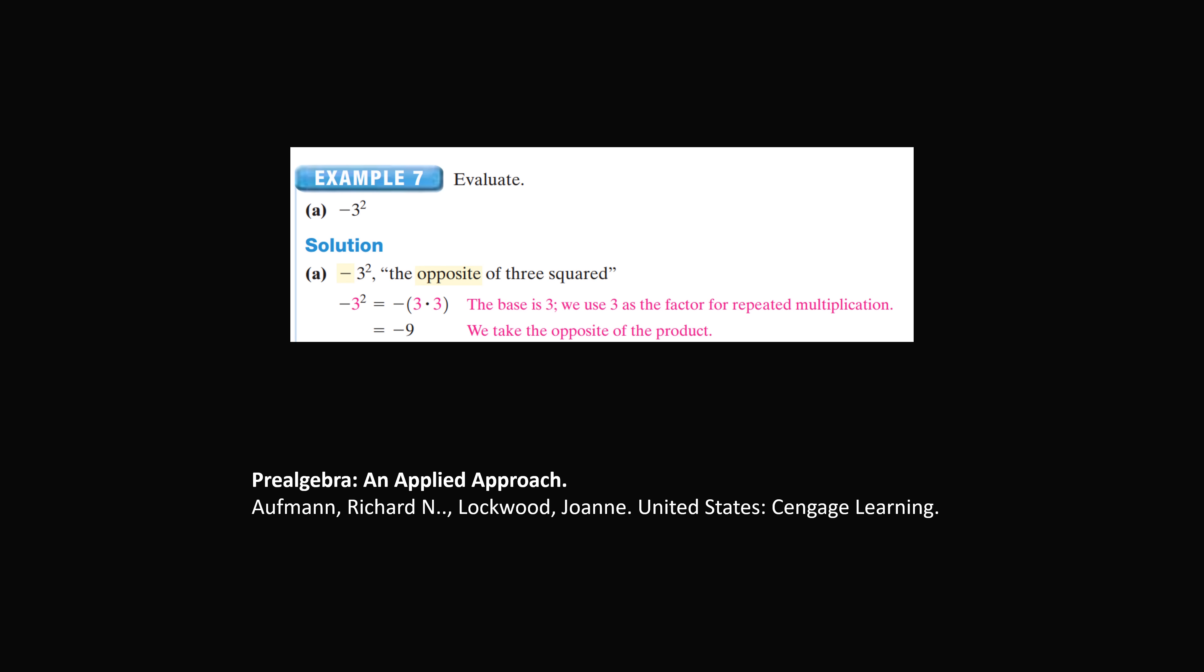Now in America, this is actually taught in schools. So here is a textbook called Pre-Algebra, An Applied Approach. The opposite of 3 squared is an example, and it shows you that you should evaluate 3 times 3 first. That becomes 9, and then the opposite of 3 squared is equal to negative 9.